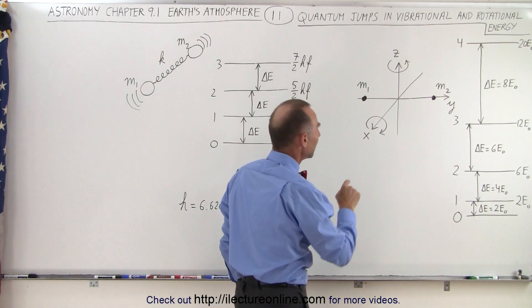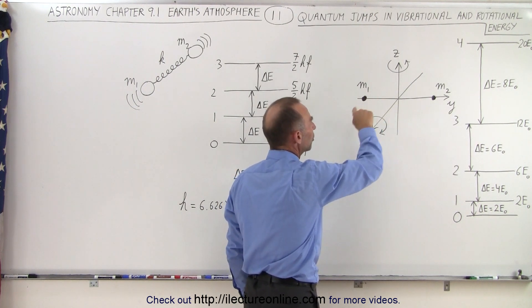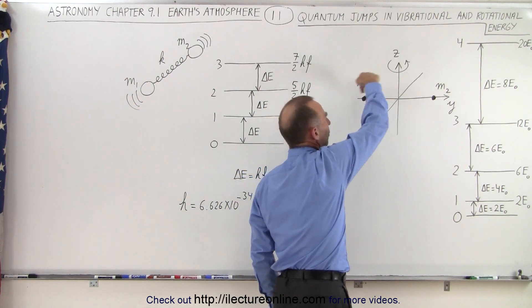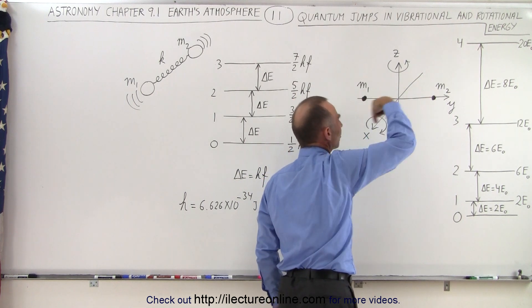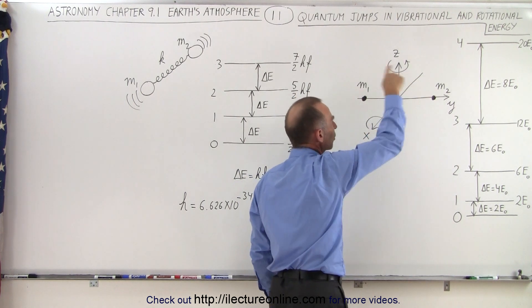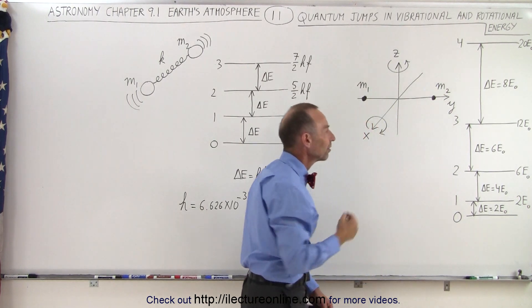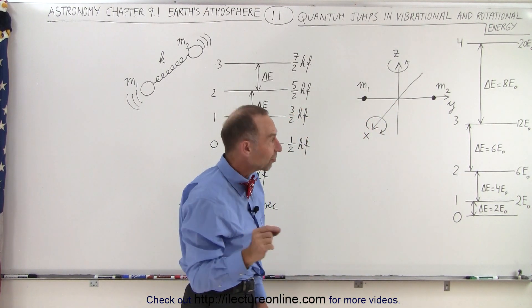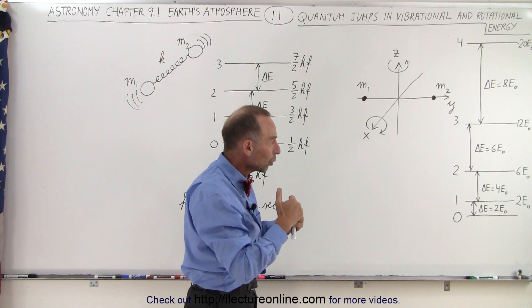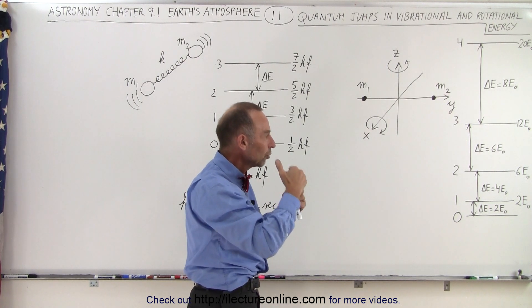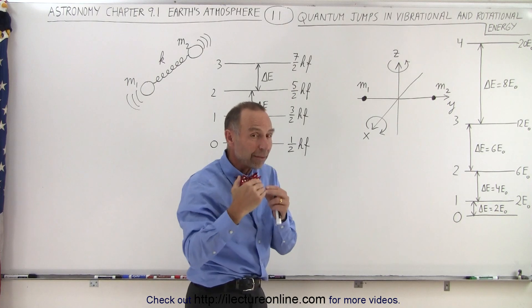Here what we see is that we have a diatomic molecule like this. This molecule can rotate in a rotational motion like this about the z-axis or in a rotational mode like this about the zy plane. What's interesting here is that it can go in a quantum mode to the next level, to the next level, to the next level, but each time it does so, the amount of energy required to go to the next level increases.